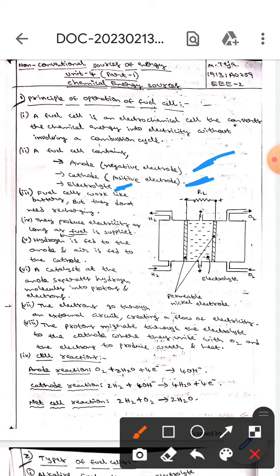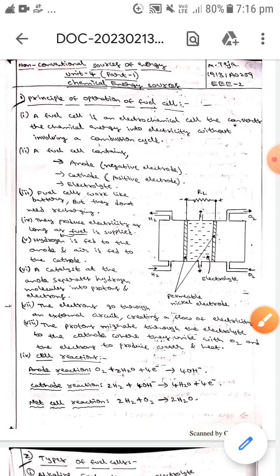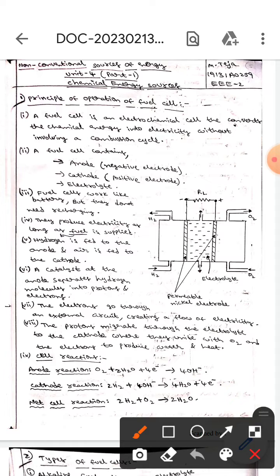Fuel cells work like batteries, but they don't need any recharging and also they produce electricity as long as fuel is supplied. Here the fuel is hydrogen. The hydrogen is fed to the anode.